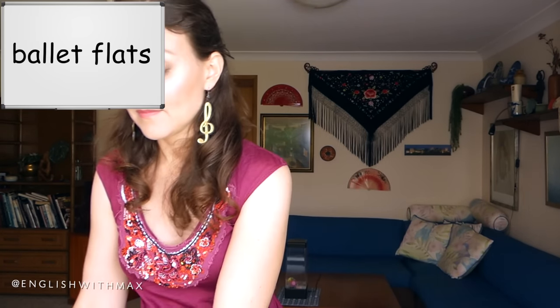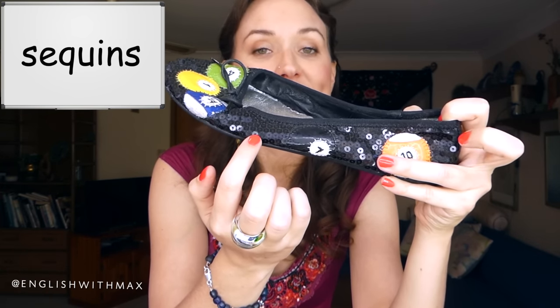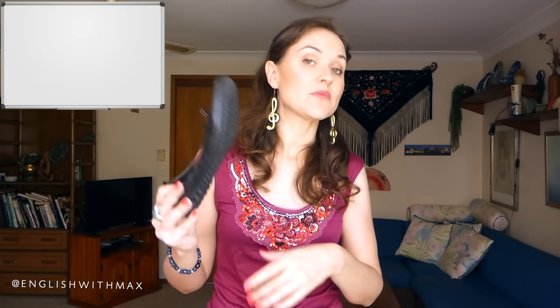These are called ballet flats. They're not actually ballet shoes — they're not for dancing — but they look a bit like ballet shoes. On these shoes you can also see some sequins — these little shiny things. Inside these ballet flats there is an arch support. The general term for women's shoes that are flat on the bottom — in other words, shoes that don't have a high heel — is 'flats'. So these are flats.